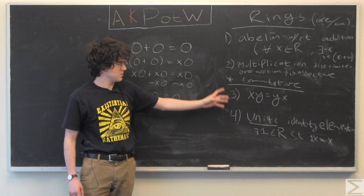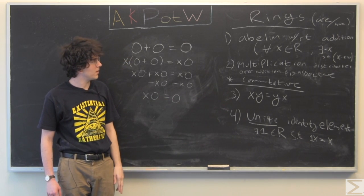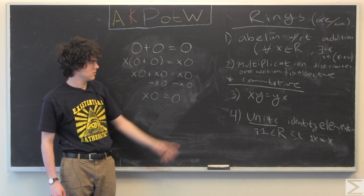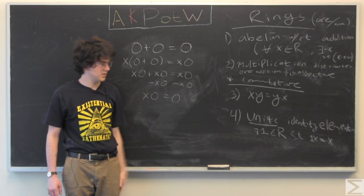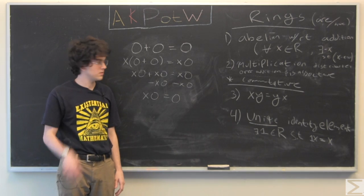And that is proof that x times 0 equals 0, in any ring, really, because we didn't use any of these commutative axioms. But it still holds true for commutative rings.